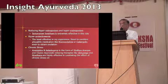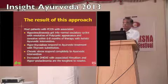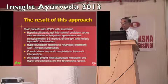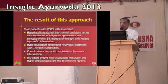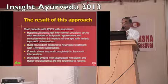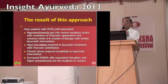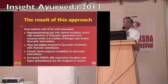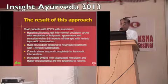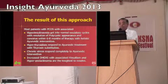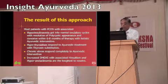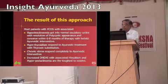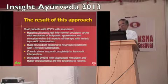The combination of all these procedures produces dramatic results. Most PCOS patients with associated hyperinsulinemia get into normal ovulatory cycles with complete resolution of the polycystic appearance of the ovary, and they conceive within six to eight months of holistic Ayurvedic intervention — including medicines, dietary modification, lifestyle changes, and aerobic exercise. Hypothyroid patients respond wonderfully to Ayurvedic treatment along with thyroxine substitution. Chronic stress responds completely to Ayurvedic intervention. Increased DHEAS with associated hirsutism and hyperprolactinemia remain the toughest to resolve.